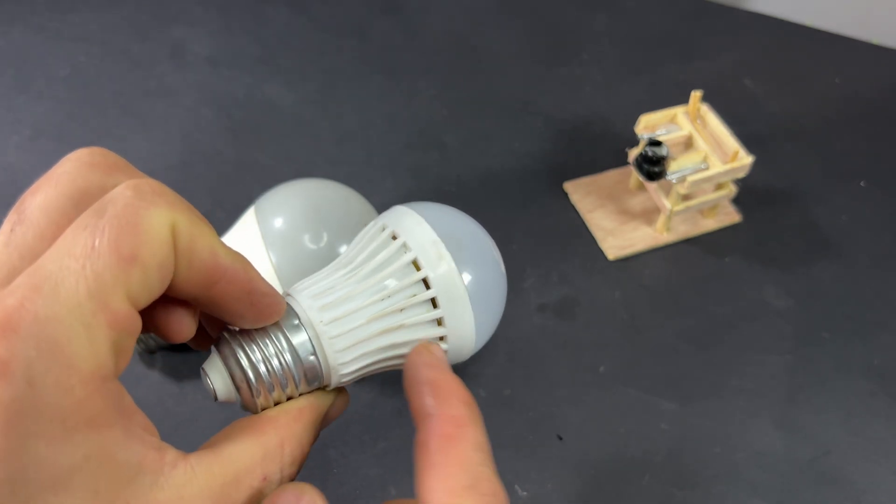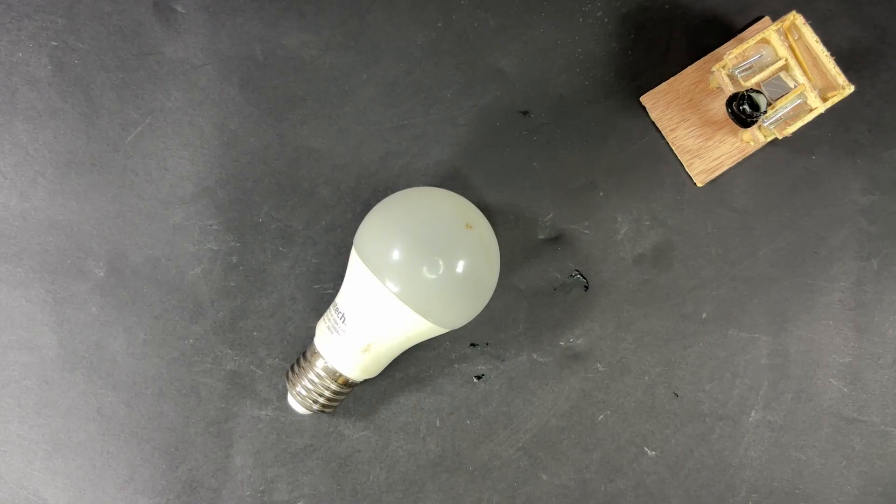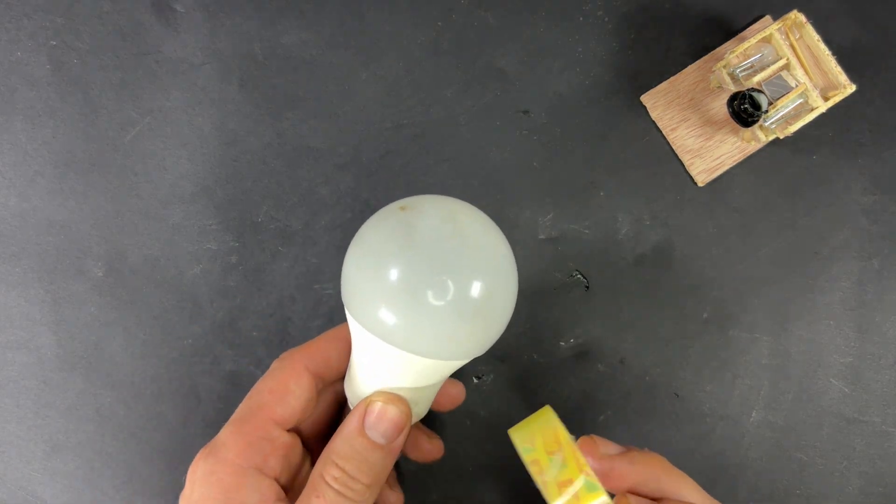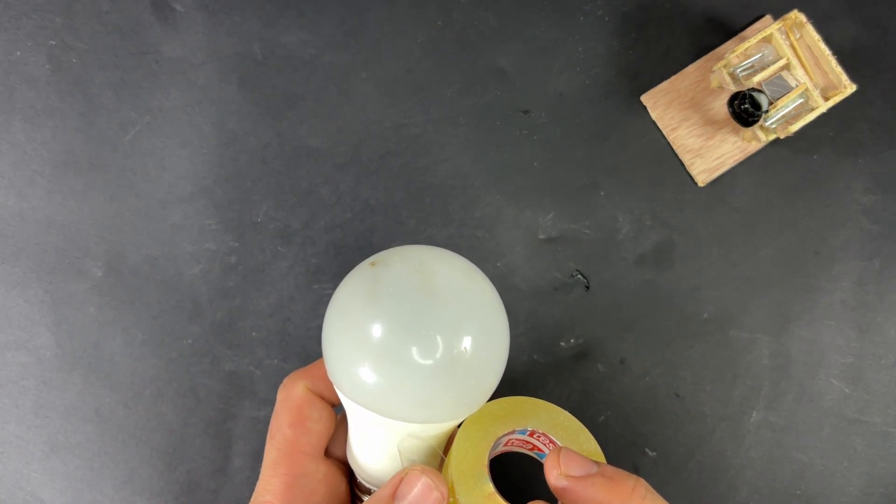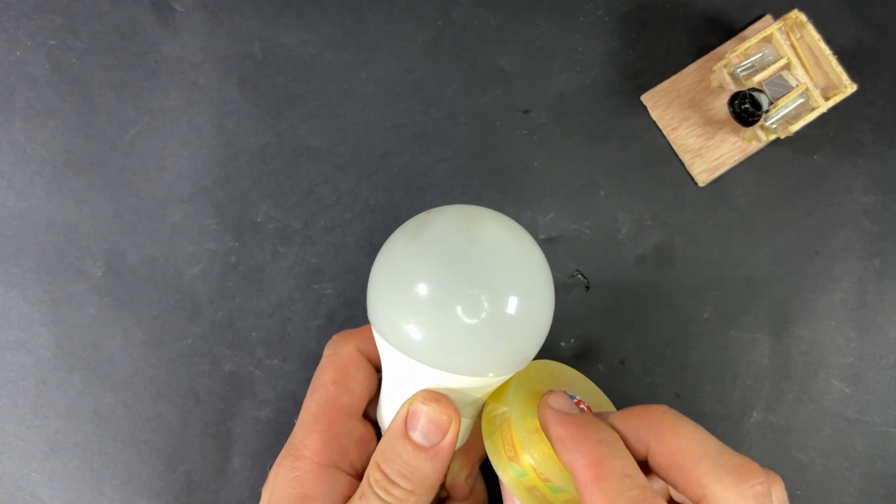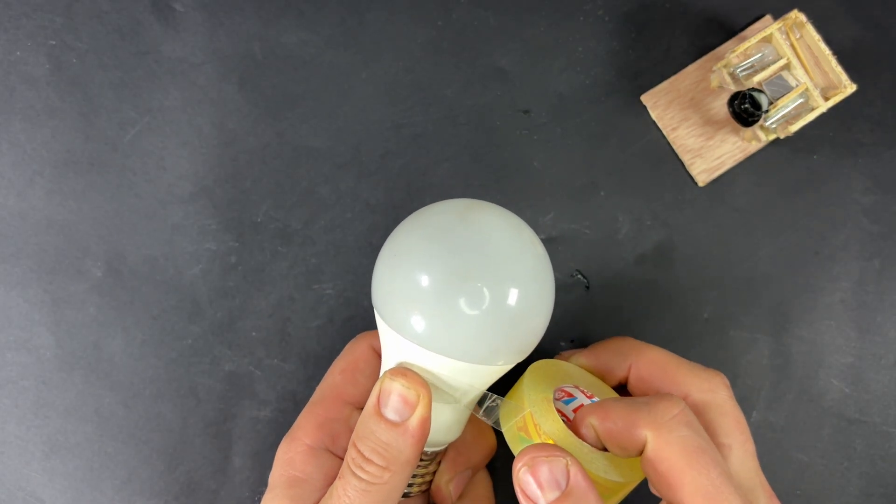First, take your bulb and wrap a piece of electrical tape around the base, just a centimeter above the edge. This will act as your guide. Make sure it's even all the way around.